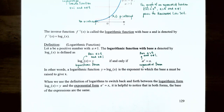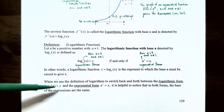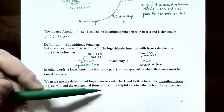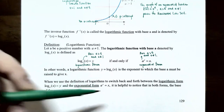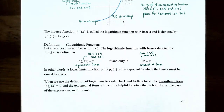Sometimes a problem is more easily solved with exponents, so we express it in exponential form. Other times we want information about a logarithmic function and write it in logarithmic form. The logarithmic form log_a(x) = y converts to exponential form a^y = x, and vice versa. These two forms are equivalent — they mean exactly the same thing.